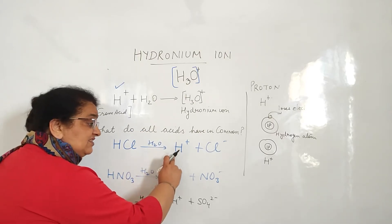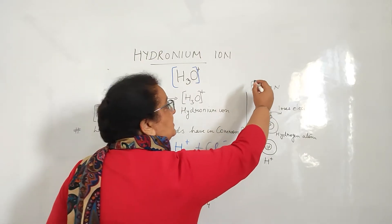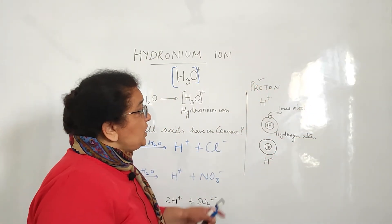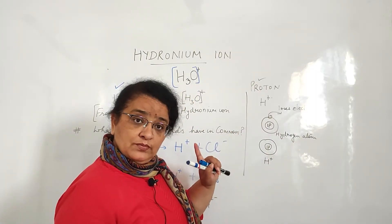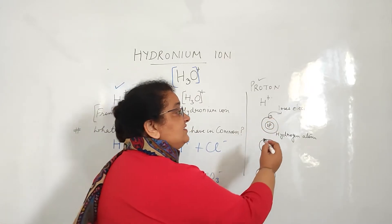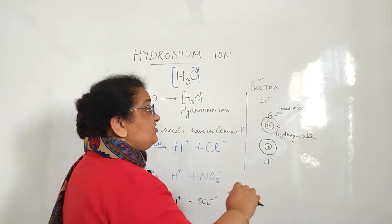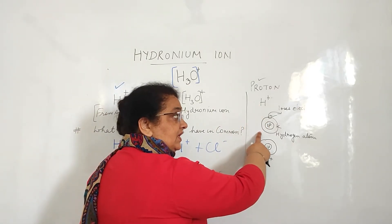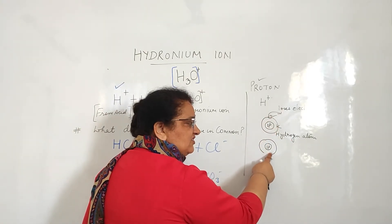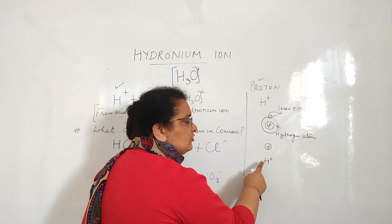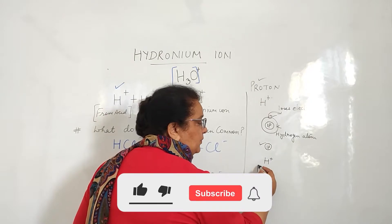Now, these H-ions — what actually are they? H-ion is nothing but simply a proton. In the hydrogen atom, the nucleus has one proton, and outside it, in the first shell — the K-shell — one electron revolves. When this hydrogen atom loses one electron, that shell is gone. So hydrogen ion is nothing but simply a proton.